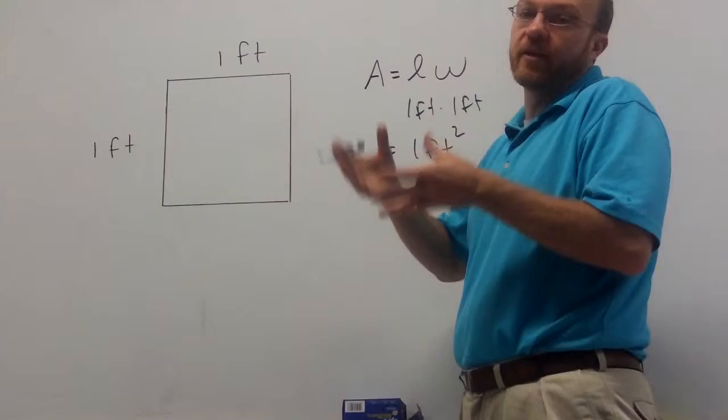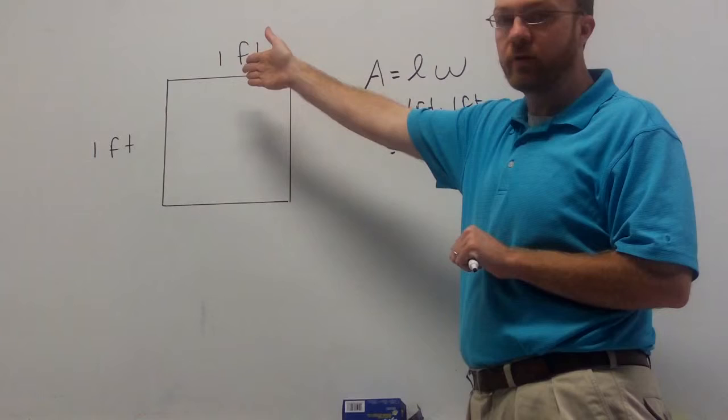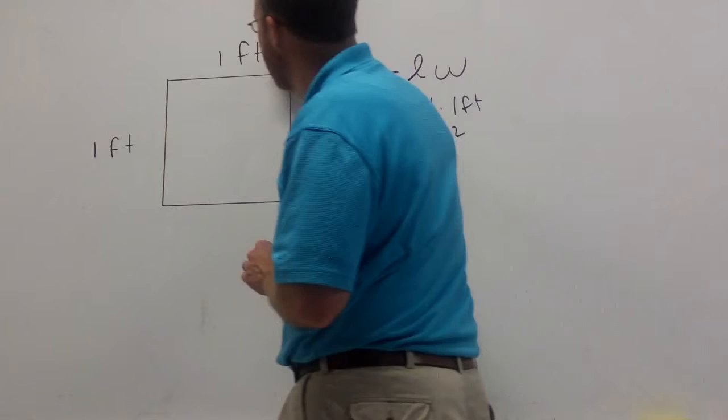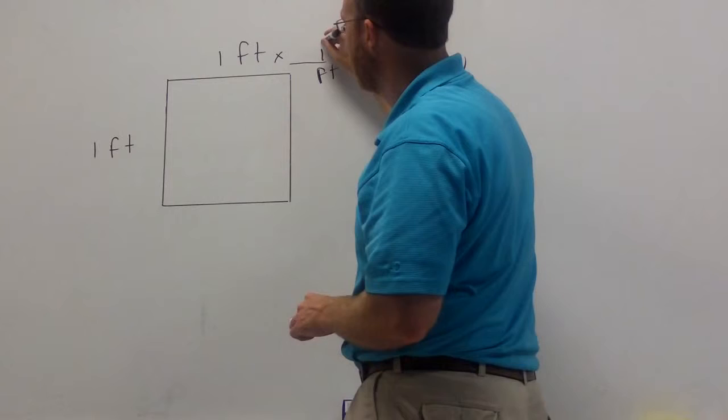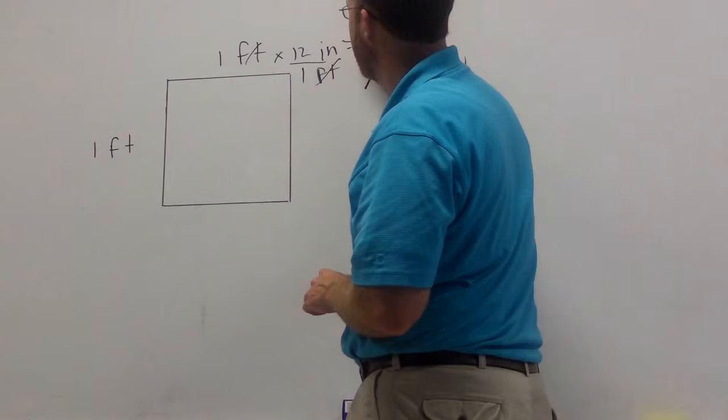In here, you really don't even need our unit analysis method because you know one foot is 12 inches. Let's still write it with that unit analysis method. So we have feet. We want to get rid of feet, and we want to switch it to inches. So 12 inches is one foot. So obviously one foot is 12 inches.